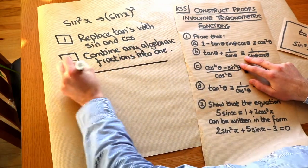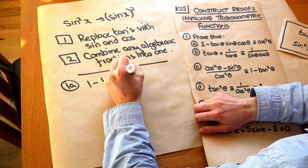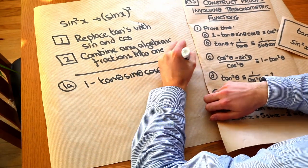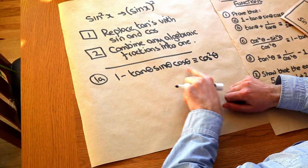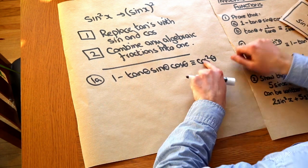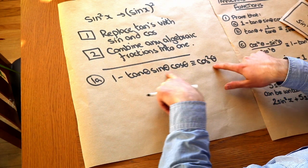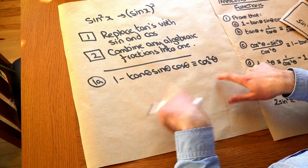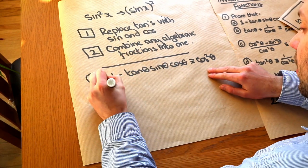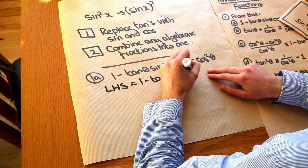Let's prove this first one here. We've got that 1 minus tan theta times sine theta times cos theta is always equal to cos squared theta. There are three ways of doing this: start with the left-hand side and manipulate it to the right, start with the right-hand side, or work on both sides simultaneously. I'm going to start with the left-hand side as it's the more complicated expression.